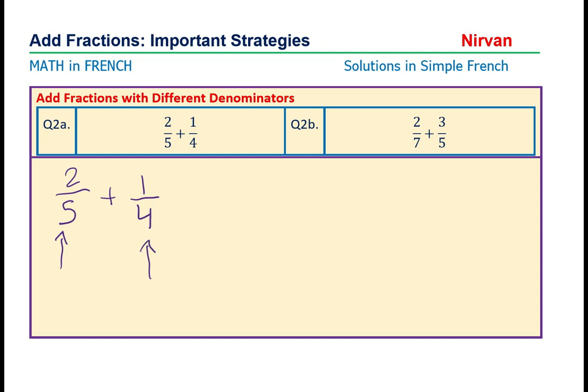Et ici, quatre fois cinq, quatre fois cinq égale vingt. Alors, le dénominateur moins commune égale vingt.